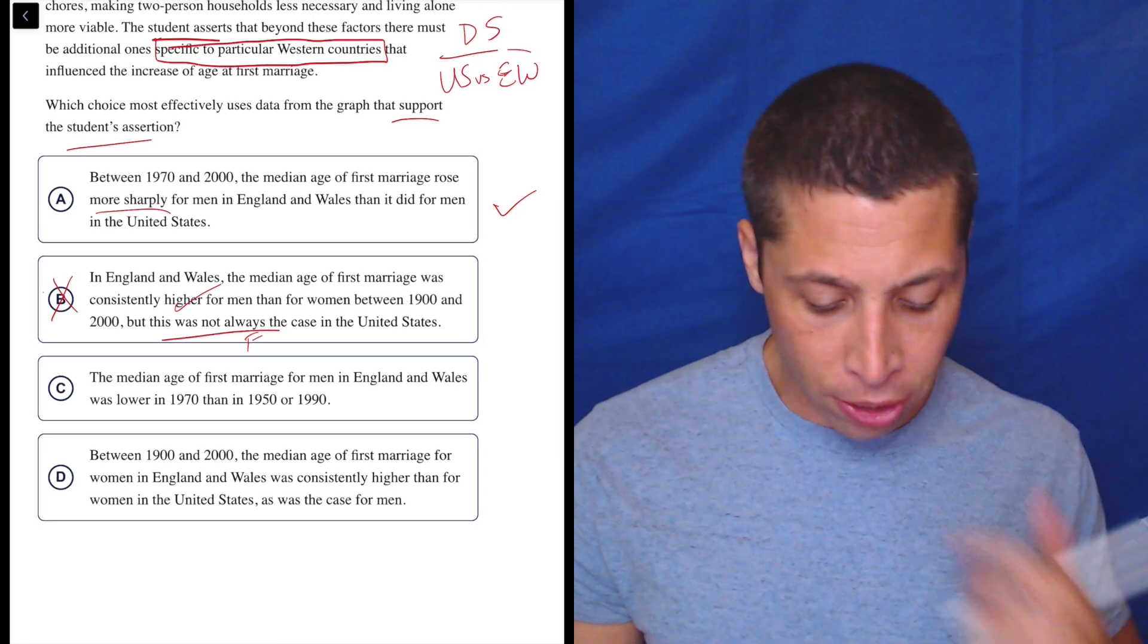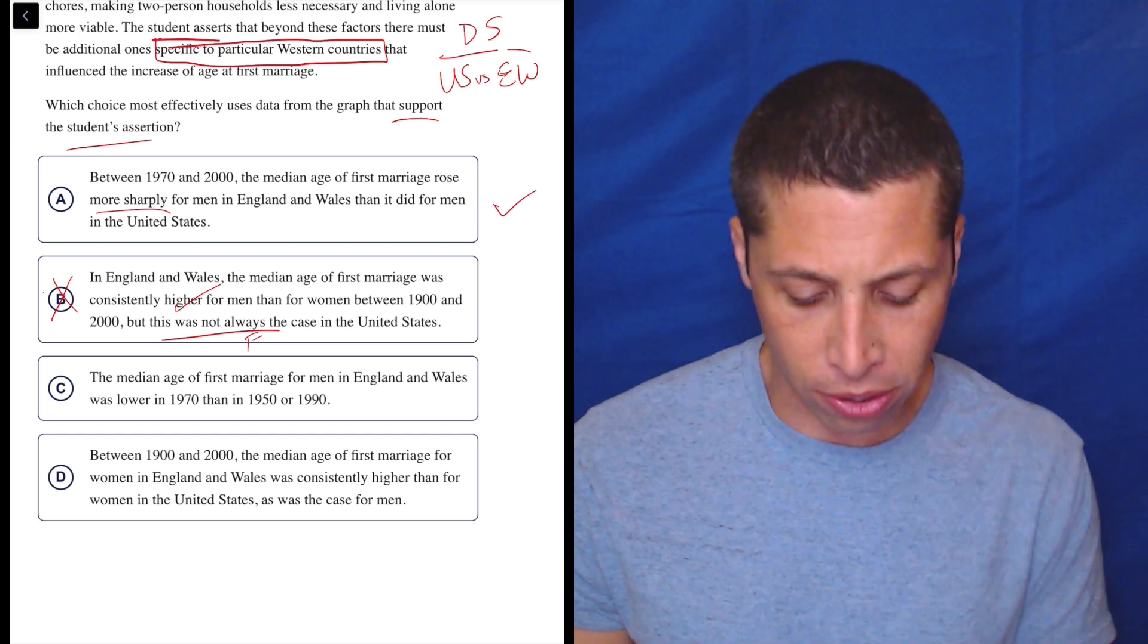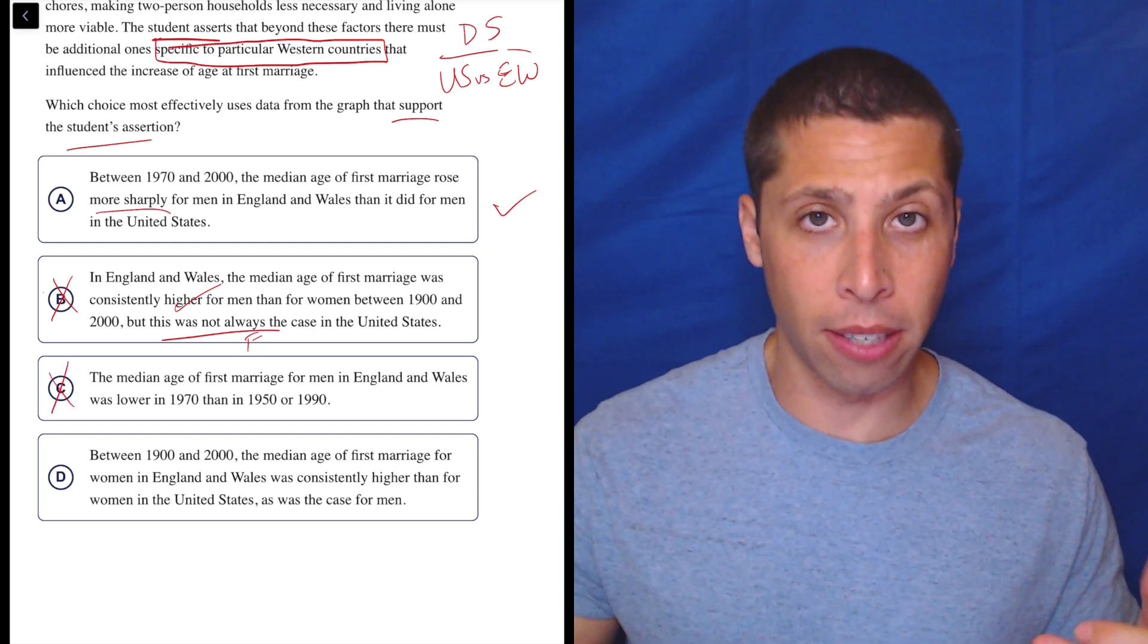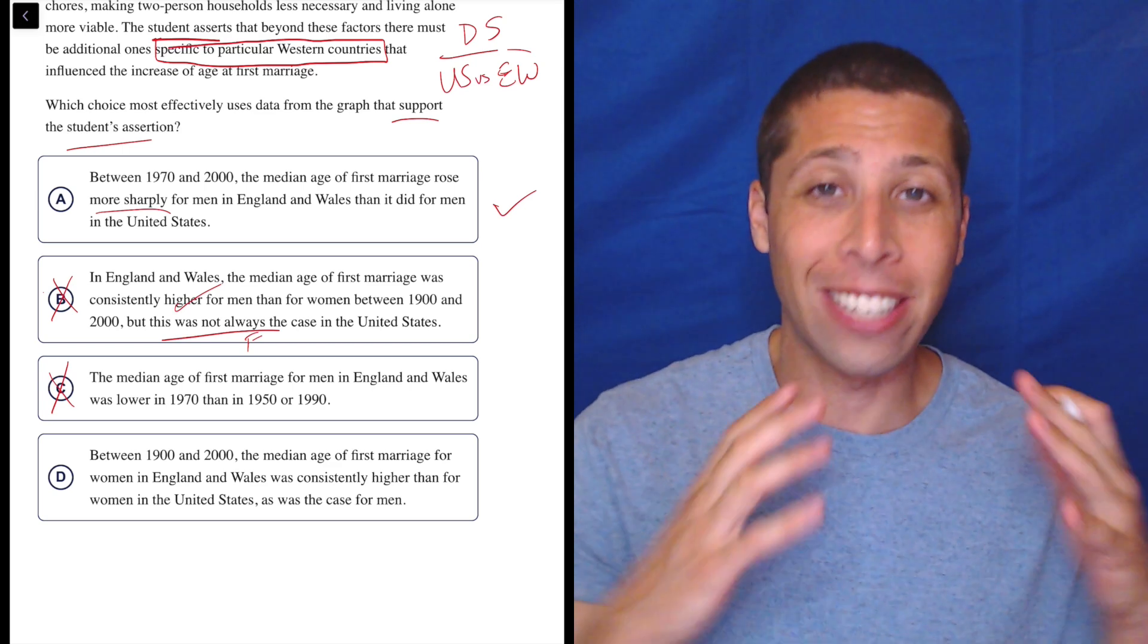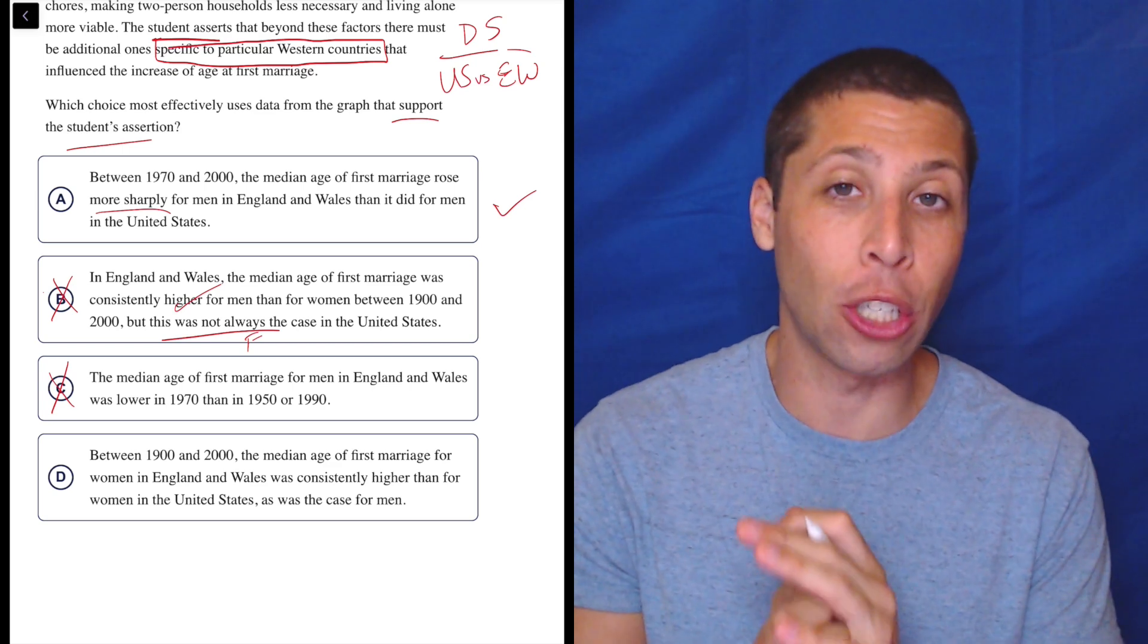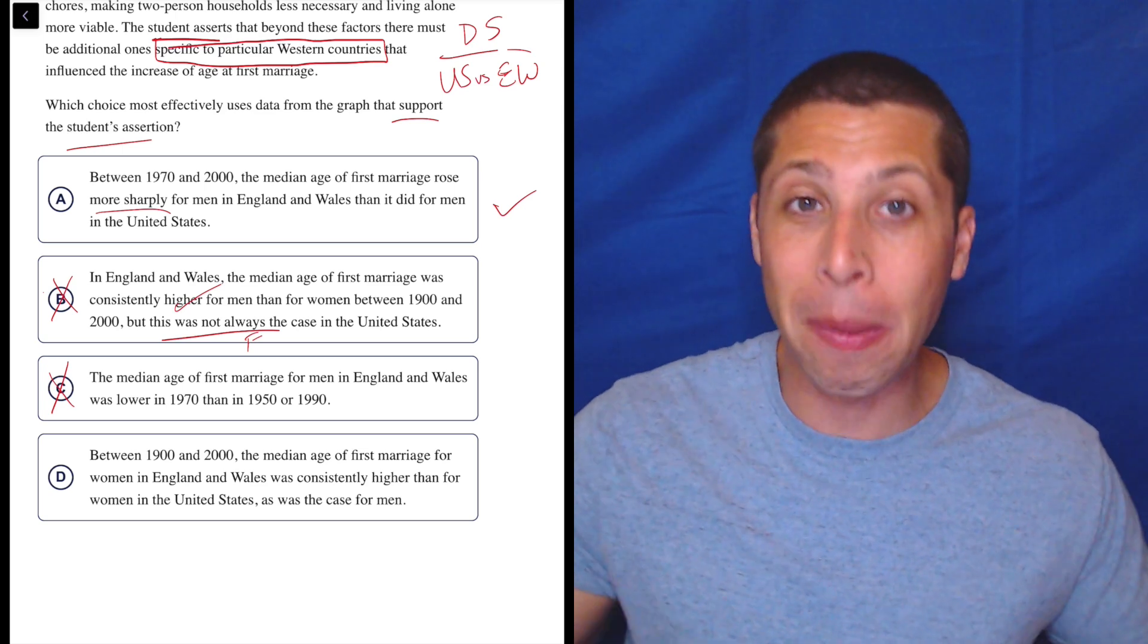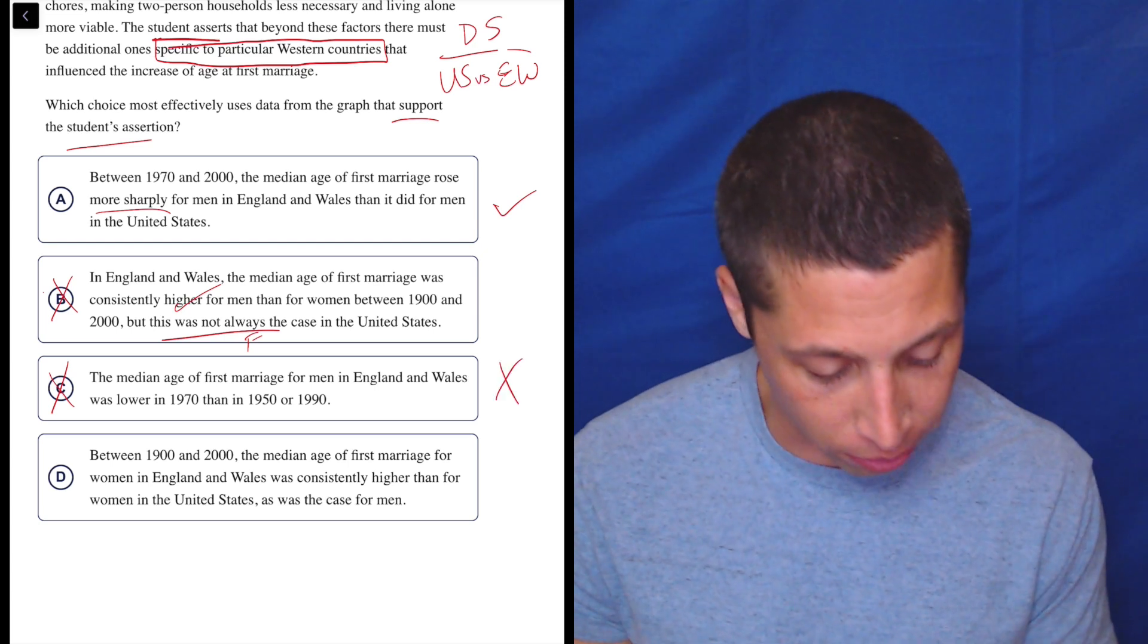C. The median age of first marriage for men in England and Wales was lower in 1970 than in 1950 or 1990. I just know this is wrong. This does not match my dumb summary. This is not comparing England versus the US because US hasn't even talked about at all. So this is a classic example of why having a little bit of a good dumb summary can help you just get rid of some time. Like we don't have to worry about checking that. I don't care if it's true. It does not match my summary. So let's get rid of that.